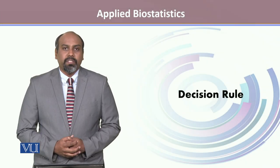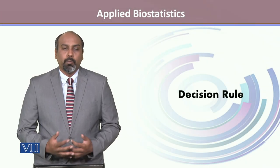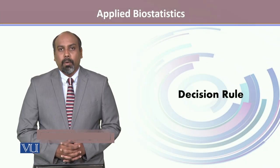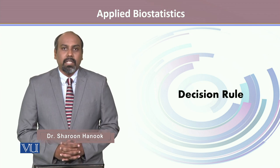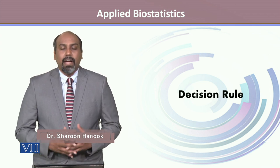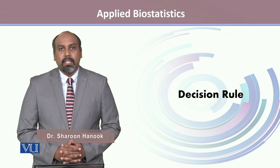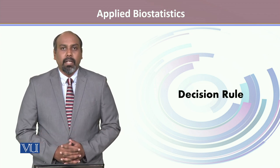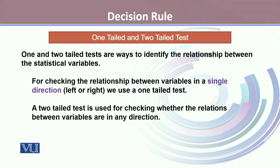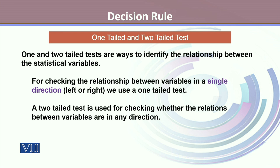In the process of testing of hypotheses, once we have stated the null hypothesis, determined the level of significance, and defined the test statistics, the next important thing is the decision rule. But before we talk about the decision rule, it's very important that we understand the concept of one-tailed test and two-tailed test.